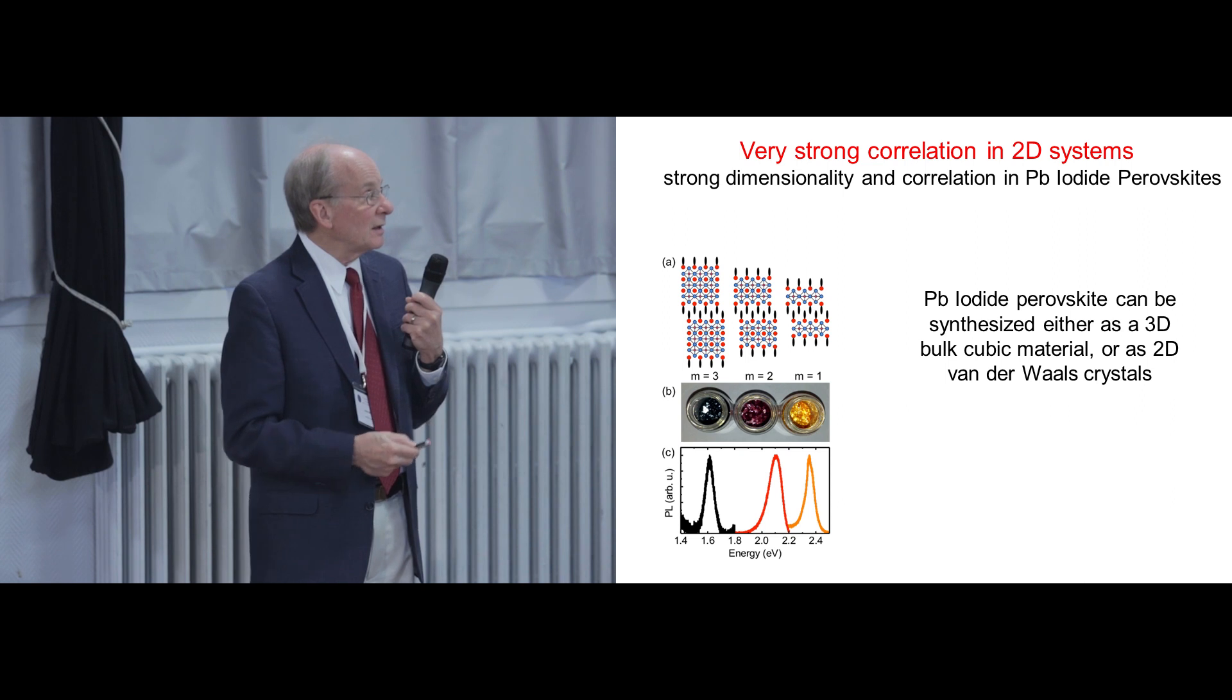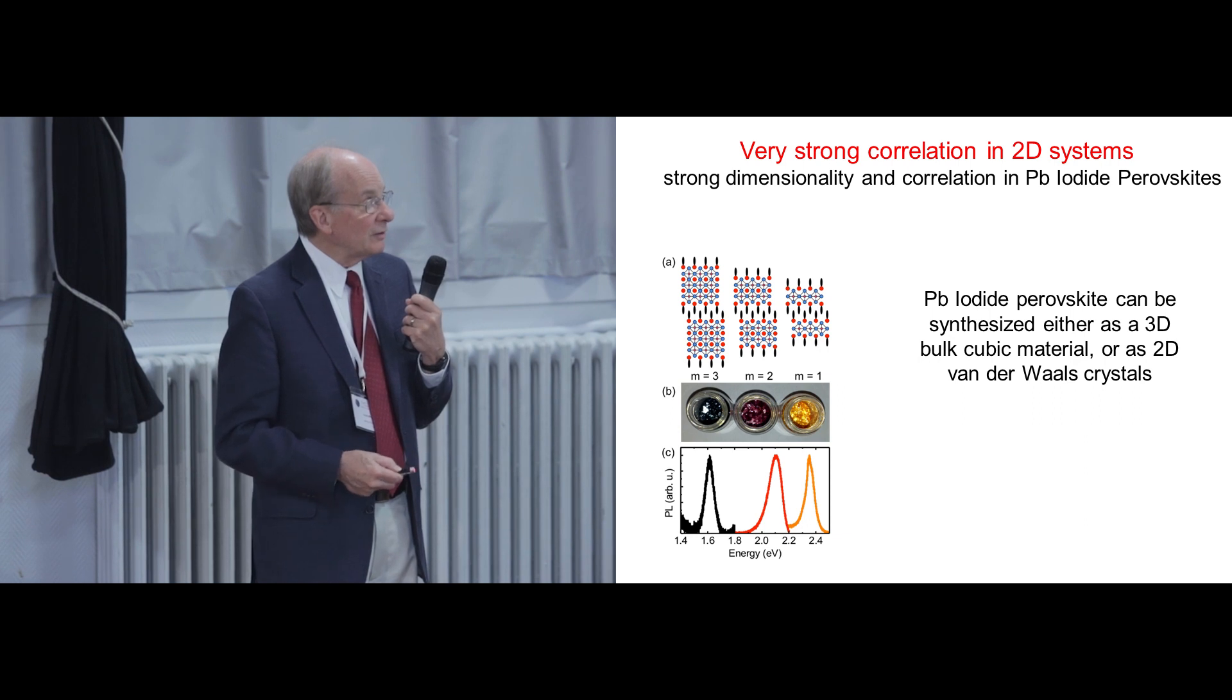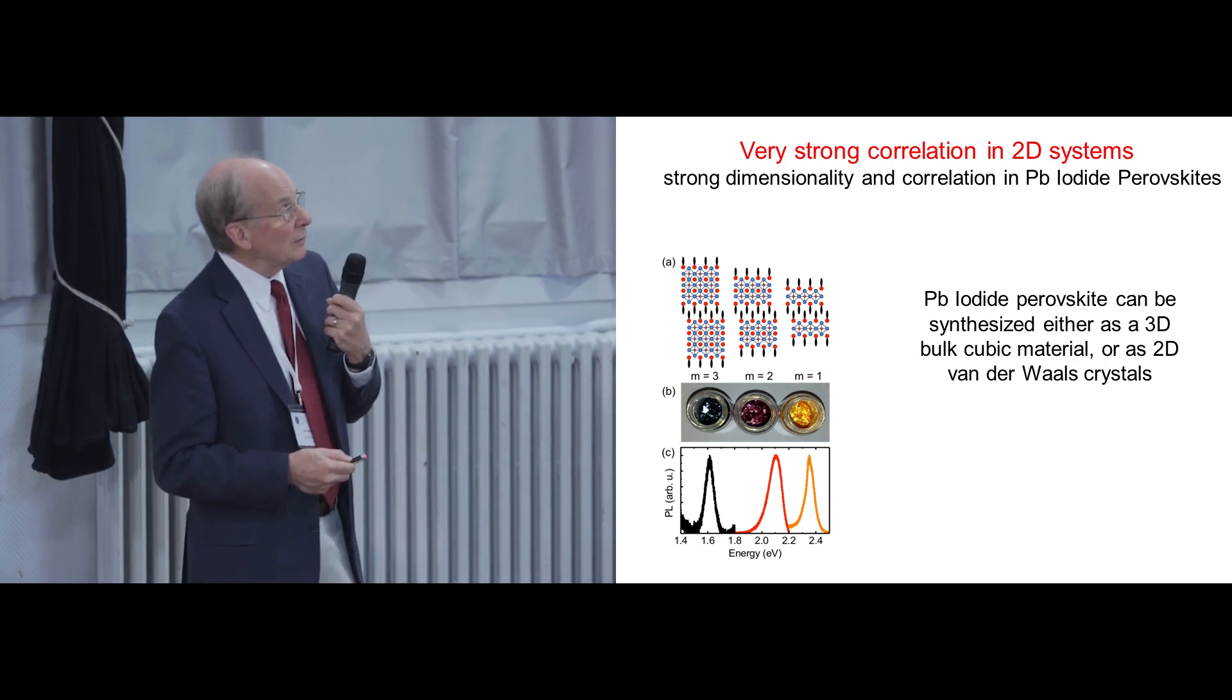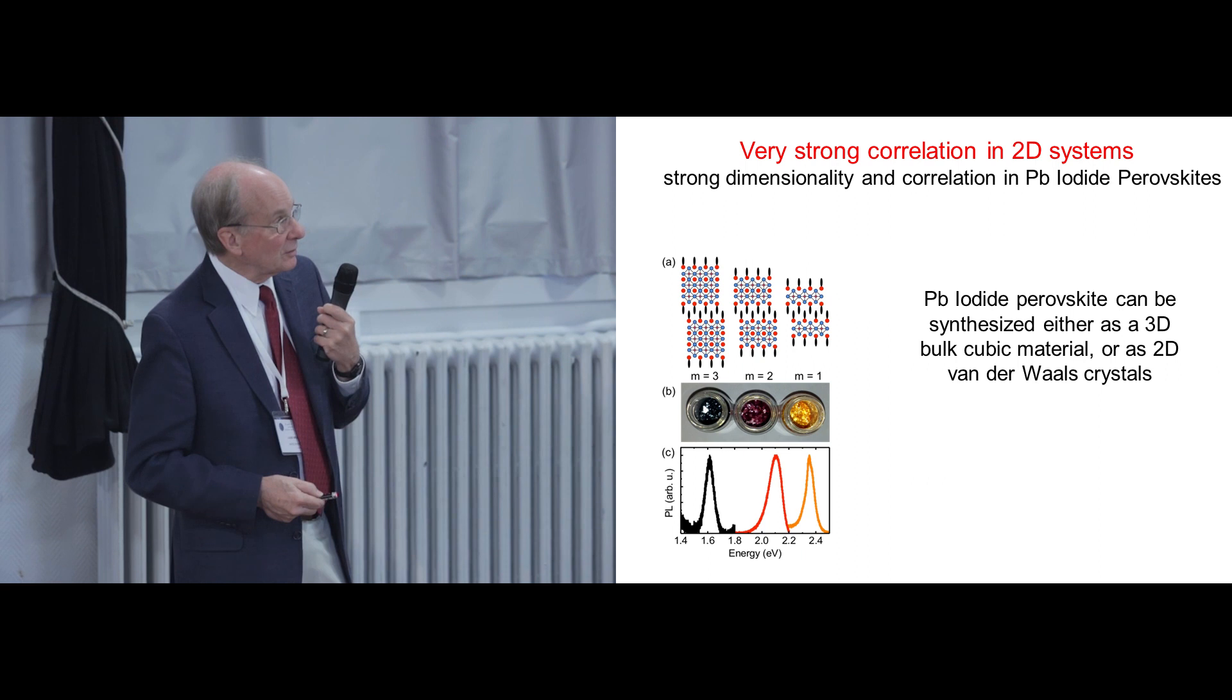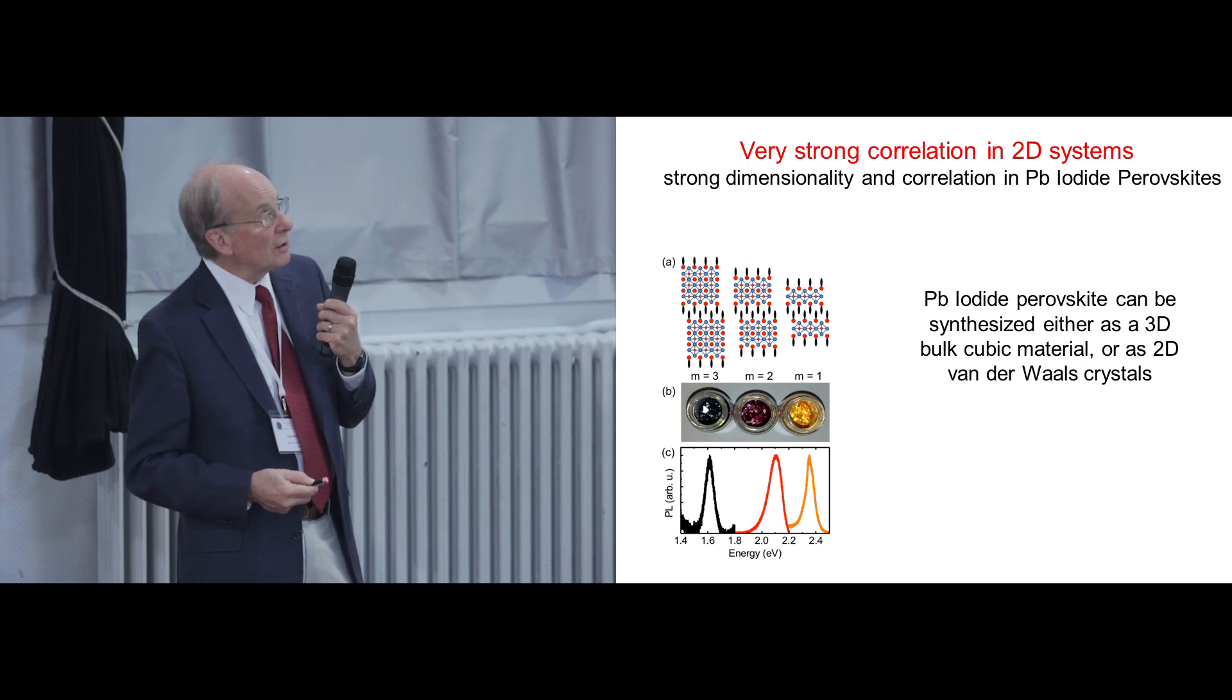And the bulk material emits at 1.6. This m equals 2 material emits at 2.0. And the one layer thick material emits about 2.4. Visible emission and higher quantum yield. Two things are going on in here. One is, there is a quantum size effect because there's a delocalization of the band structure in this vertical direction. And so in the one layer thick material, there's a quantum size effect in the z-direction here. That shifts the band gap into the visible part of the spectrum.